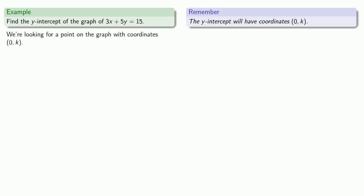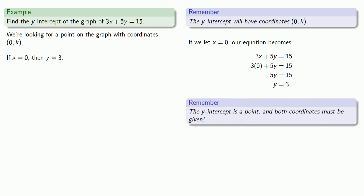So let's try to find the y-intercept of our graph of 3x + 5y = 15. So the y-intercept will have coordinate (0, k). So we're looking for a point on the graph with coordinate (0, k). So if we let x equals 0, our equation becomes 3(0) + 5y = 15, and solving this gives us y equals 3. So if x equals 0, then y equals 3. And remember, the y-intercept is a point, and both coordinates must be given. So the y-intercept is (0, 3).